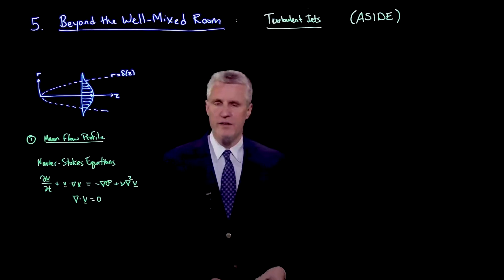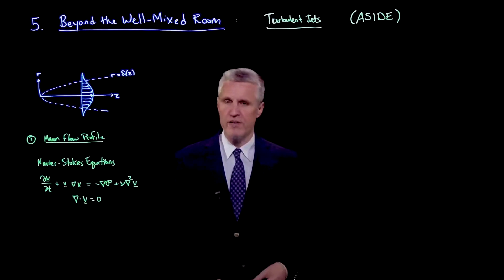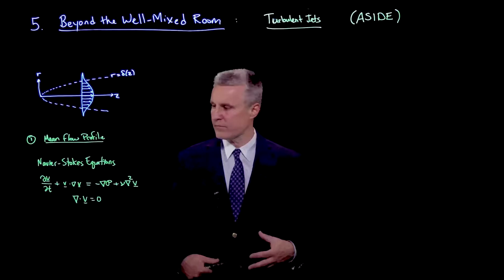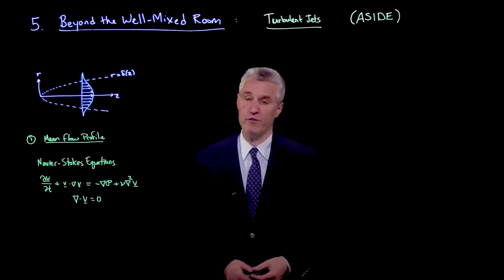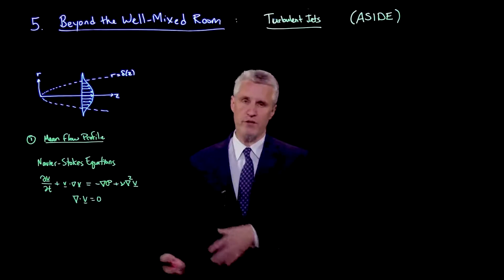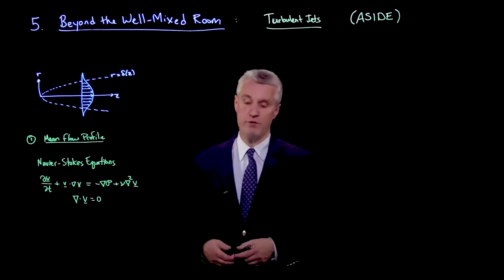So as a technical aside, let me go through and sketch the derivation of the structure of a turbulent jet, in particular, the conical shape that we have when the flow is turbulent.